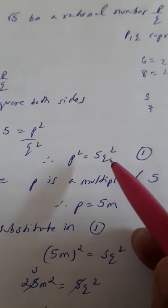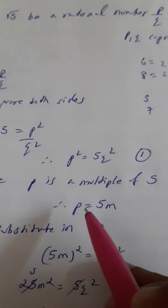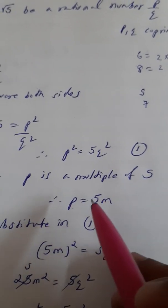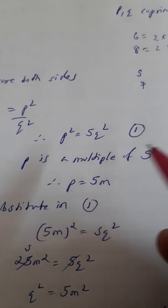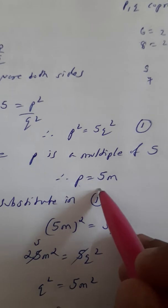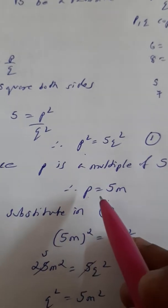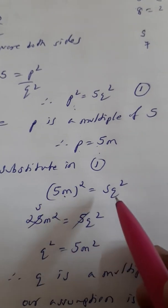Because this 5 into anything—q could be any value—p will always be a multiple of 5. So we can say p is equal to 5m. I can write this in form of a variable m where m stands for anything. So p equal to 5m, it's a multiple of 5. Now this value I am going to substitute in equation 1. So p equal to 5m, I am putting here. So we get 5m whole square is equal to 5q square.